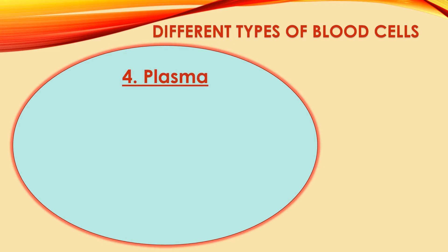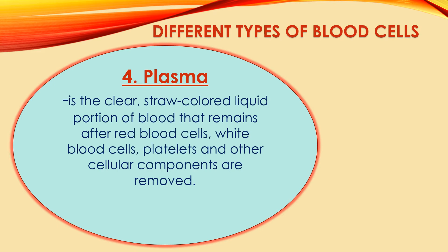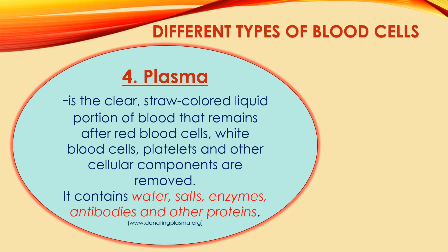Number four is plasma. Plasma is the clear, straw-colored liquid portion of blood that remains after red blood cells, white blood cells, platelets, and other cellular components are removed. It contains water, salts, enzymes, antibodies, and other proteins.